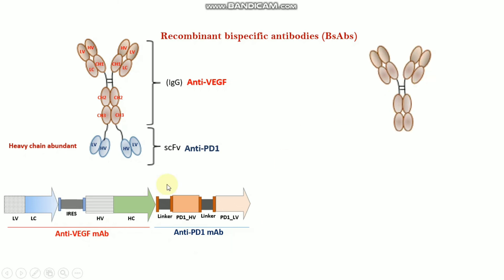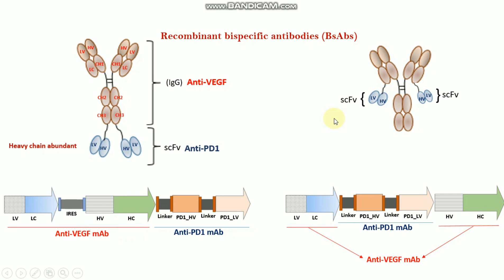Another way, we can join this ScFb in the light chain constant part. Here is the light chain constant part. When the ScFb is joined in the light chain constant part, that is known as the light chain appended format. Finally, we get this kind of sequence: the anti-VEGF, with the anti-PD-1 monoclonal antibody sequence joined in the light chain, and here is the HV and SC part of the anti-VEGF.